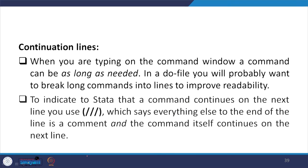When you are typing in the command window, a command can be as long as needed. In a do file, you will probably want to break long commands into lines for better readability. In that case, use triple forward slash to indicate to Stata that a command continues on the next line. You enter a triple forward slash and start the next line — that breaks the command and Stata reads it in continuity. These three slashes mean that Stata actually reads it in continuity.